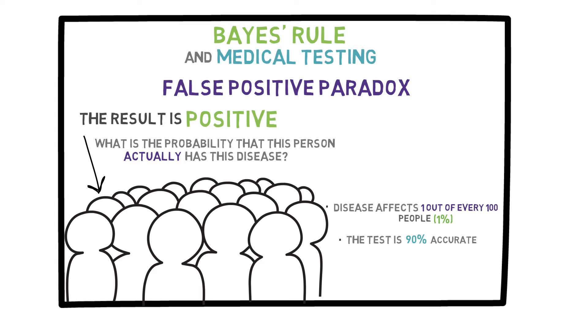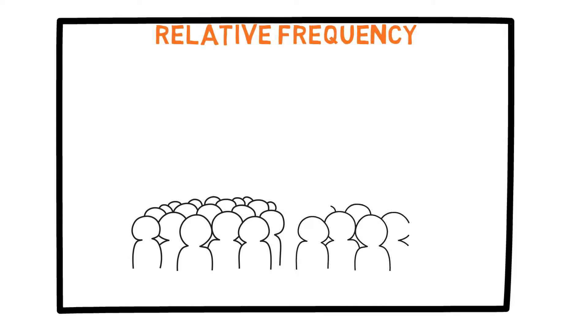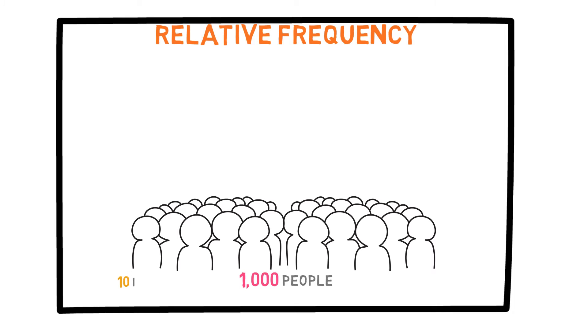So, based solely on this information, what is the probability that the person actually has the disease? How do we solve these kinds of problems? Relative frequency is usually a powerful method in answering these types of questions. Let's consider a sample consisting of 1,000 people. Since the disease occurrence rate is 1%, on average 10 of them have this disease and 990 of them do not.